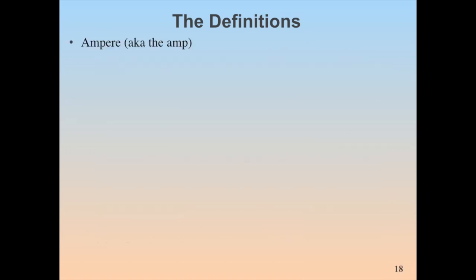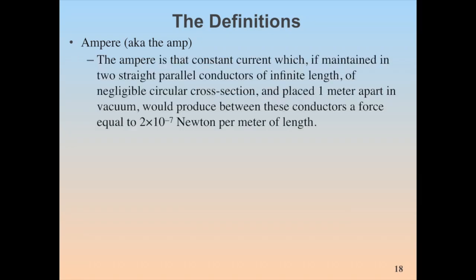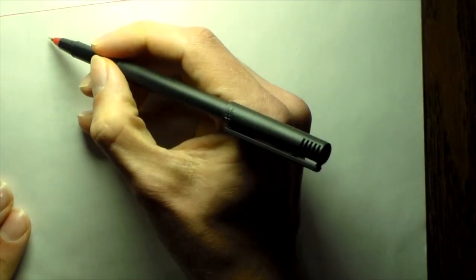All right, next up is the ampere. You may have also heard this referred to as the amp. All right, now this is a bit of a long-winded definition. Here, the ampere is that constant current which if maintained in two straight parallel conductors of infinite length of negligible circular cross-section and placed one meter apart in vacuum would produce between those conductors a force equal to 2 times 10 to the minus 7 newtons per meter of length. All right, now as for the ampere, it is a bit of a strange definition but just to illustrate what we were actually looking at here.